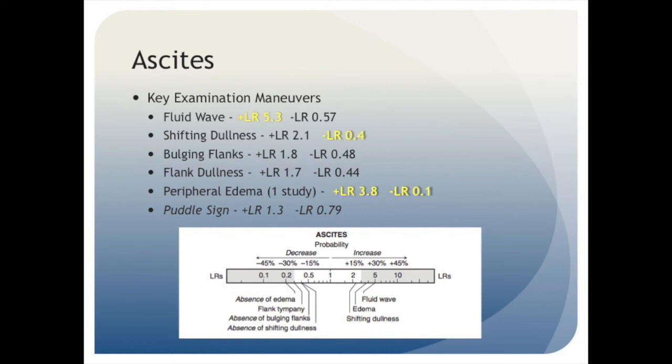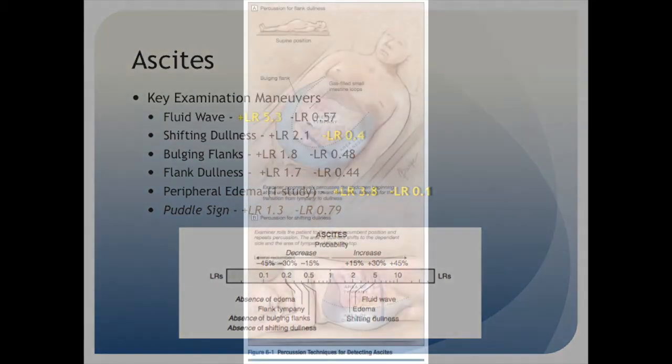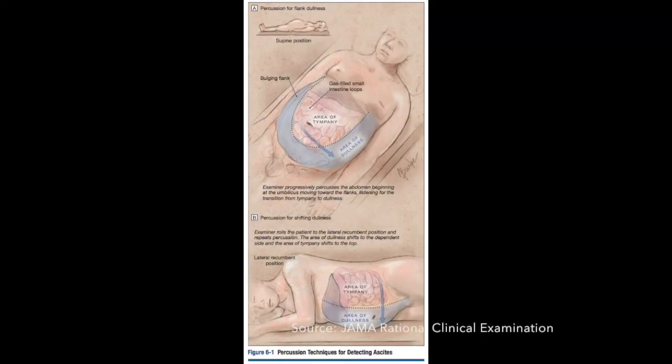Shifting dullness is another exam maneuver that's useful in assessing ascites. It's relatively sensitive with a negative likelihood ratio of 0.4. This exam maneuver relies on the fact that in a belly that's full of fluid the air-filled bowel will rise to the surface creating an area of relative tympani along the midline along with bulging and dullness to percussion along the flanks. Asking the patient to rotate switches the area of dependency and causes the fluid to shift creating new areas that are dull to percussion. This exam maneuver will be demonstrated for you later on in the video.